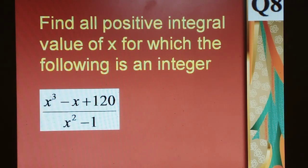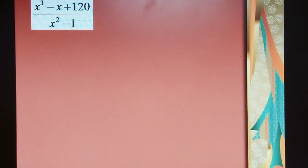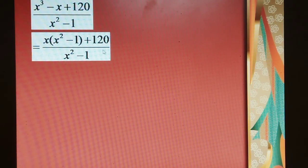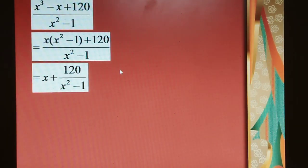So very simple. See, the given expression (x³ - x + 120)/(x² - 1) can be written as x(x² - 1) + 120. By dividing the numerator by x² - 1, we get x + 120/(x² - 1).